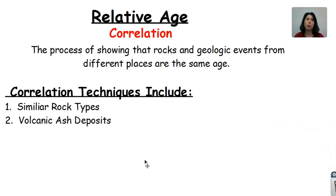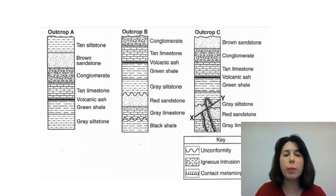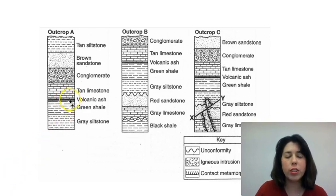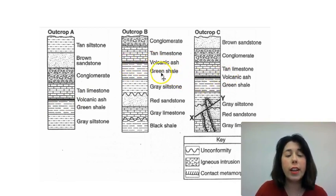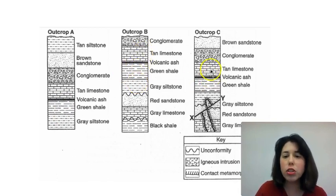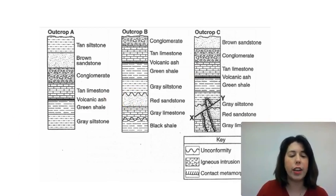Another aspect we can use is a volcanic ash deposit. When a volcano erupts, it will rapidly disperse a wide amount of volcanic ash. It's great because it's a singular event that spreads over a wide area during a very short period of time. In this diagram, we have three outcrops and we use volcanic ash to help us correlate — we can see volcanic ash appearing in all three locations. So we can use not only similar rock types like tan limestone, green shale, and gray siltstone, but also the volcanic ash layers to help us match and correlate them.